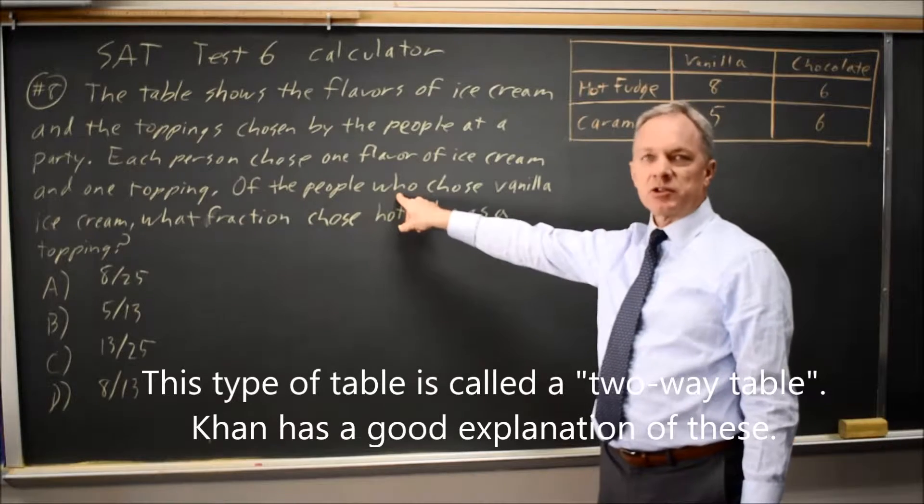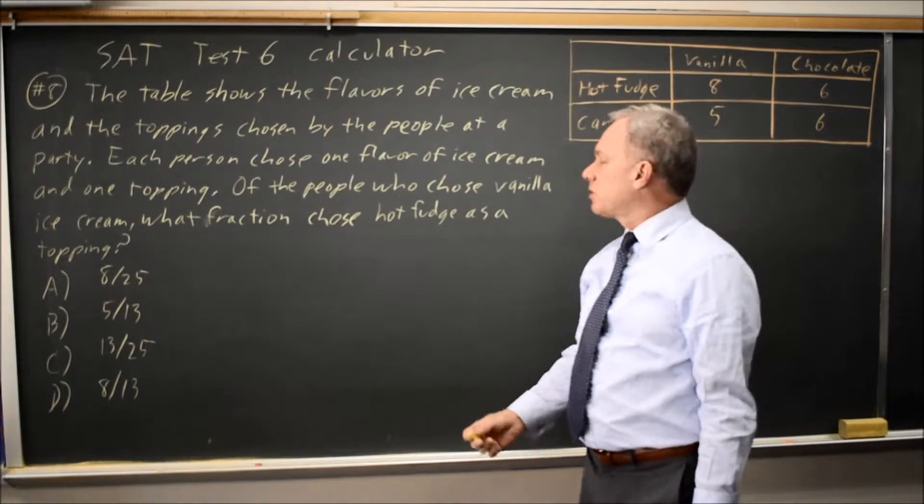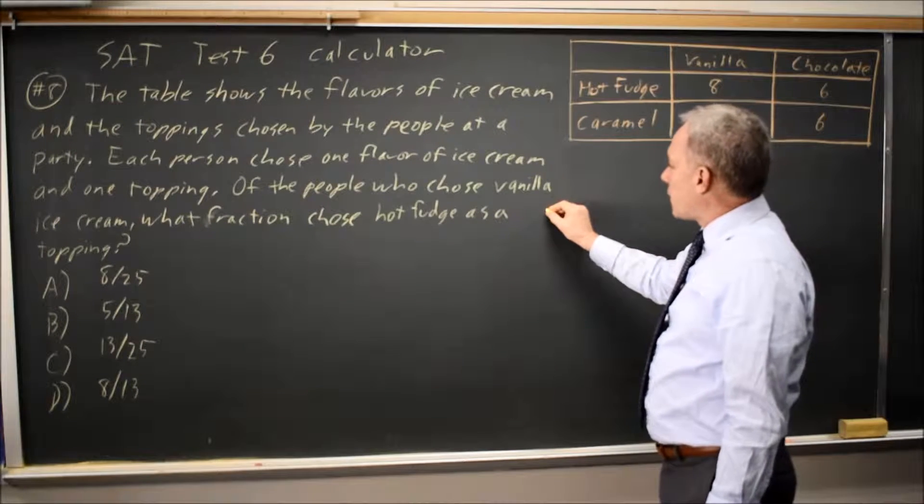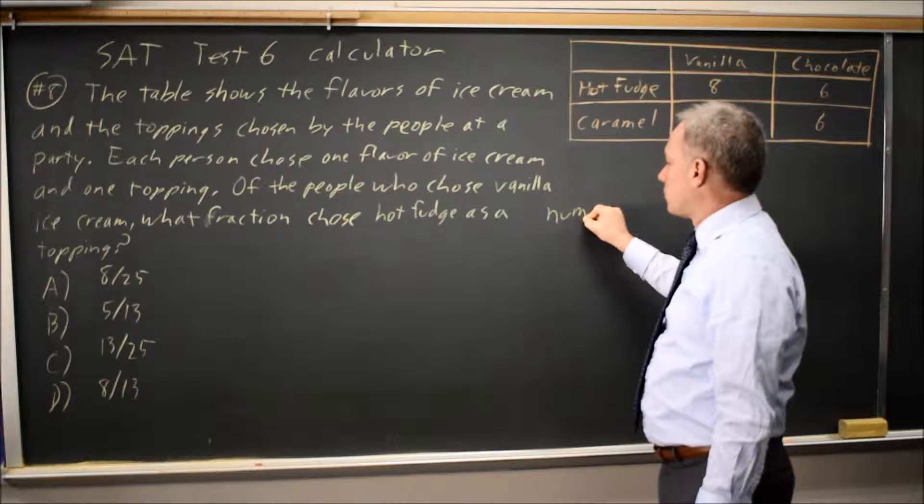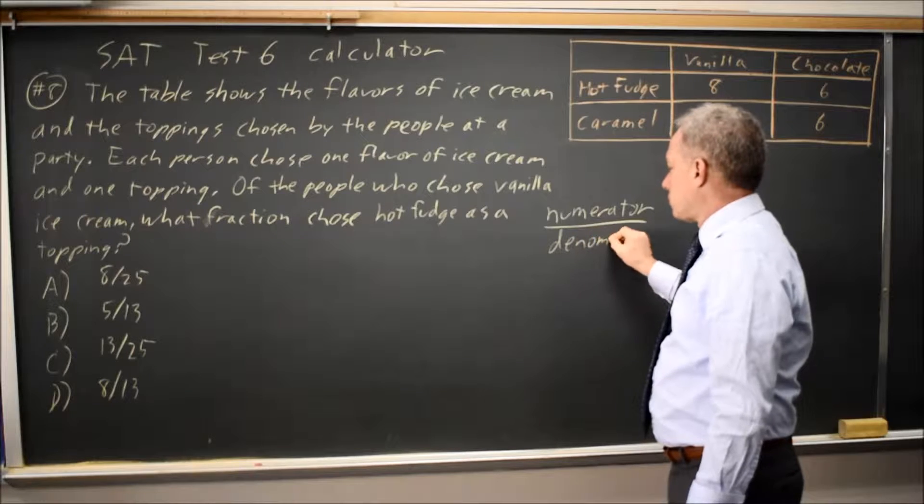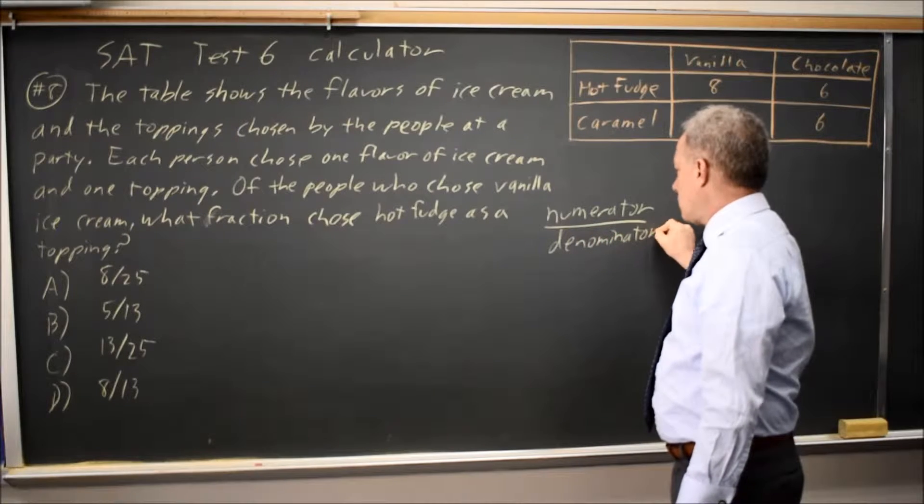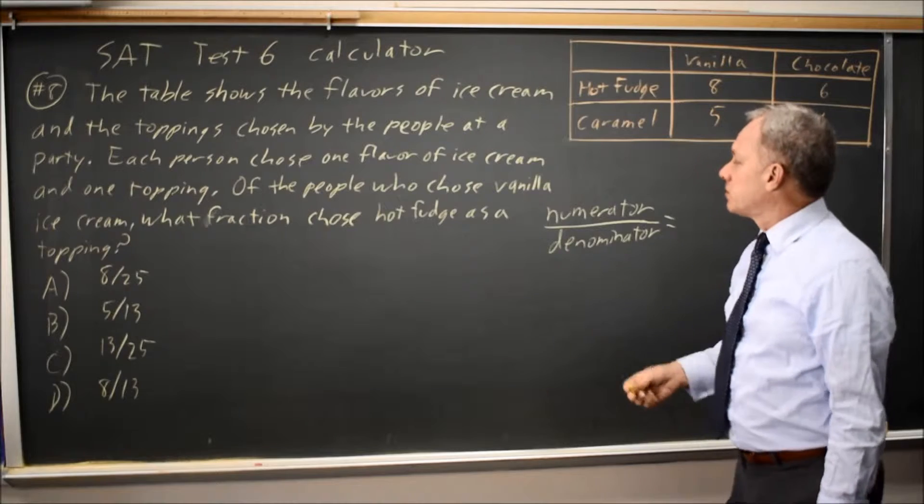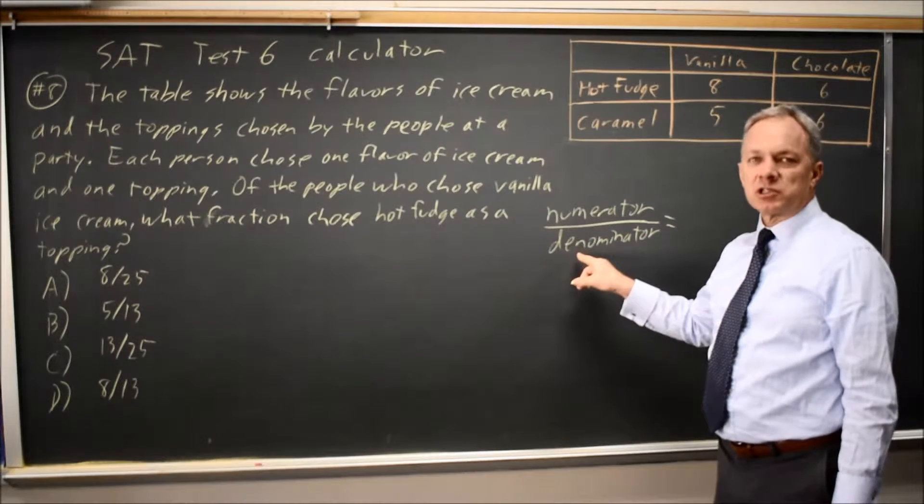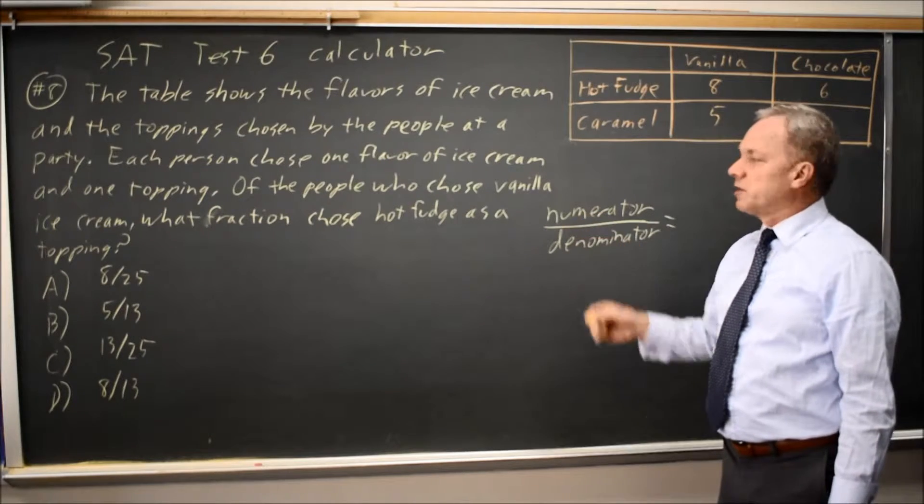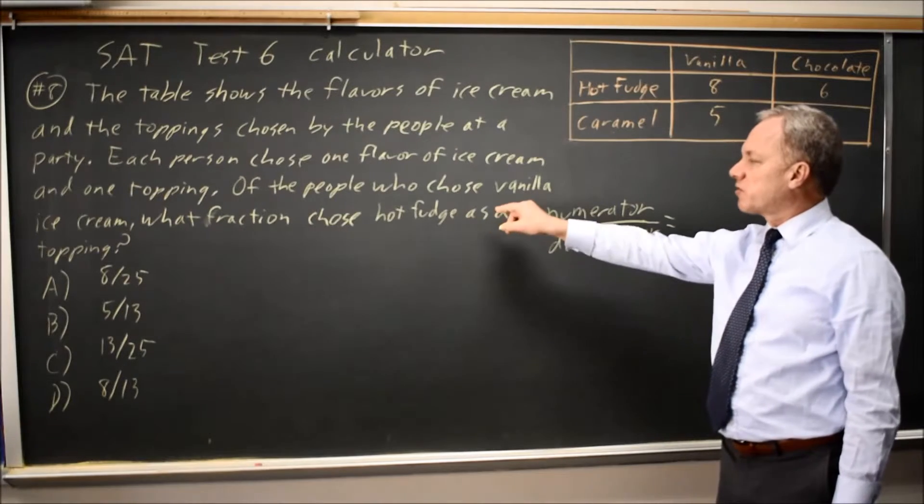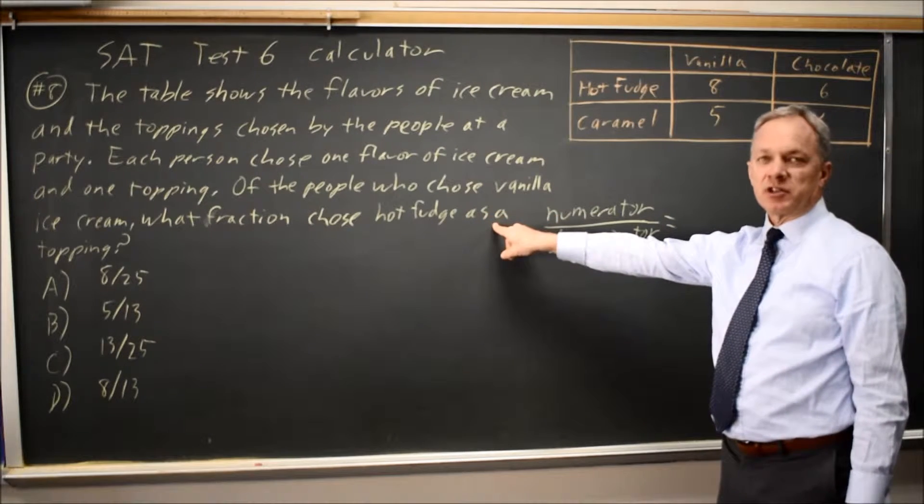For all these probability questions from a table, I'd like to find the numerator and the denominator, almost as separate questions. The denominator is how many individuals could have been chosen total according to the precise wording of the question, and the numerator is, of those individuals, how many are considered a success. How many are in the group we're trying to find the probability that an individual is in?